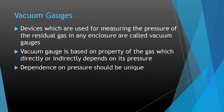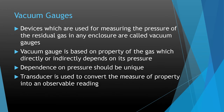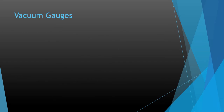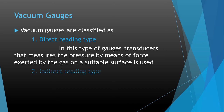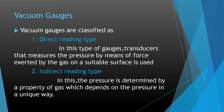The dependence on pressure should be unique. A transducer is used to convert the measured property into an observable. Vacuum gauges are classified as direct reading type and indirect reading type. In the direct reading type, the transducer measures the pressure by means of the force exerted by the gas on a suitable surface. In the indirect reading type, the pressure is determined by a property of the gas which depends on the pressure in a unique way.